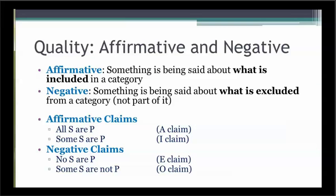Standard propositions or standard claims are one of two qualities, either affirmative or negative. A proposition is affirmative when it says what is included in a category. A claim is negative when it says what is excluded from a category. The A and I claims are the affirmative standard propositions, and the E and O claims are the negative standard propositions.